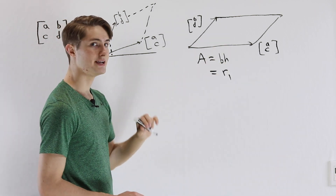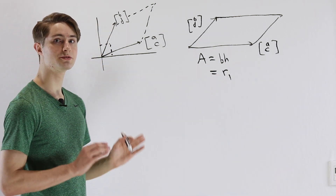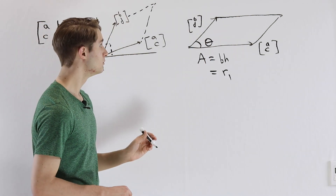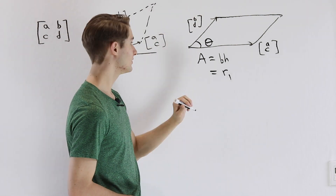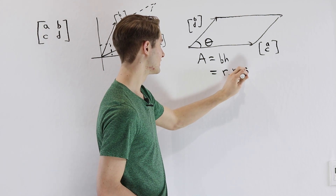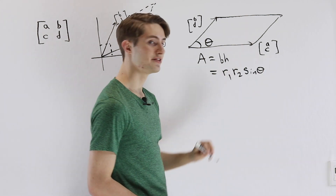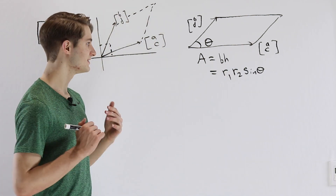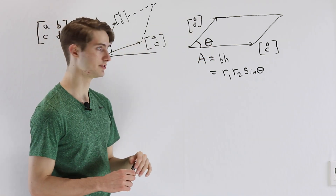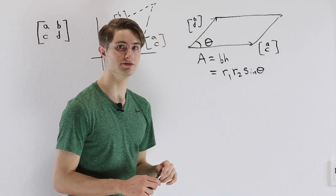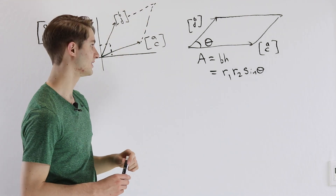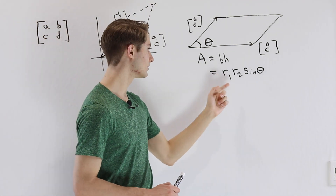Now we need the height, and that comes from doing some trigonometry. If we call the angle between these two vectors theta, we know that the vertical height of this parallelogram is the length of the second vector — we'll call that R2 — times the sine of theta. That comes from the fact that sine of theta gives us the vertical value for a point on the unit circle, scaled up by the length of our second vector.